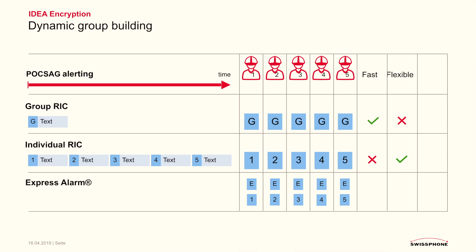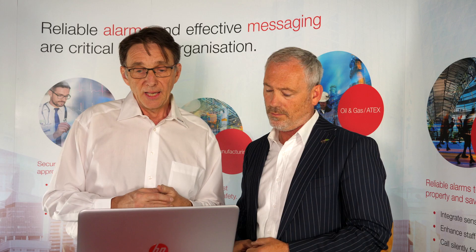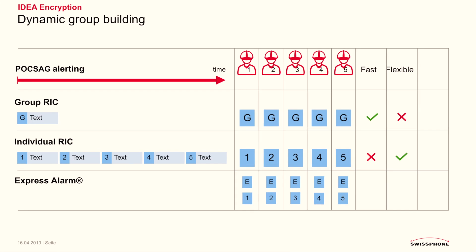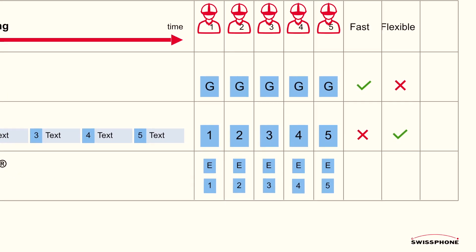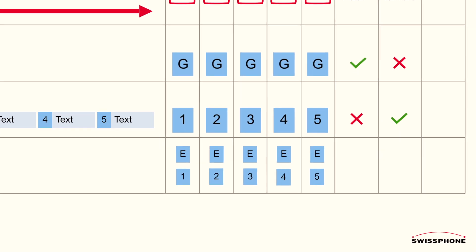Express Alarm is invented at Swissphone and patented. For express alerting you have to configure two RICs in each pager: one common RIC denoted with the letter E, which is common for all pagers, and one individual RIC. The pager will signal the reception of a message only if it receives both calls.